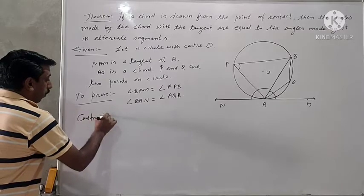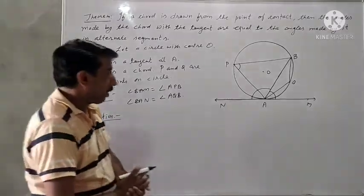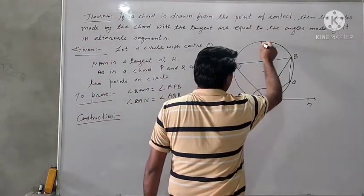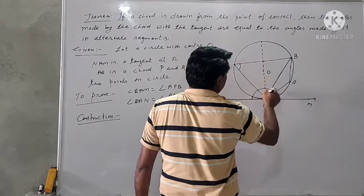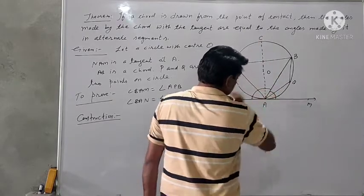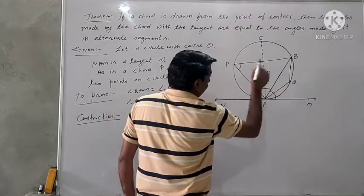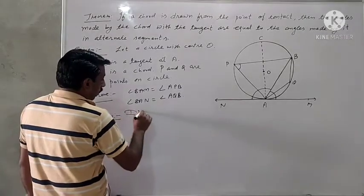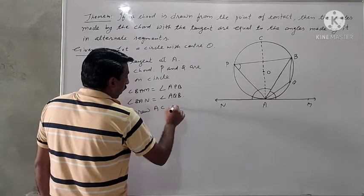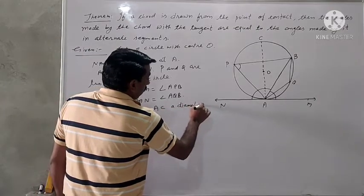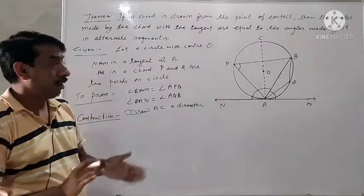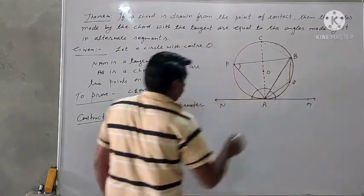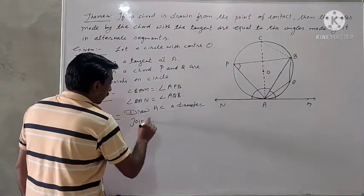We need some construction to prove this. Construction: draw a diameter from point A — let's call it AC, so AC is a diameter. We have drawn AC under construction. Also join BC.